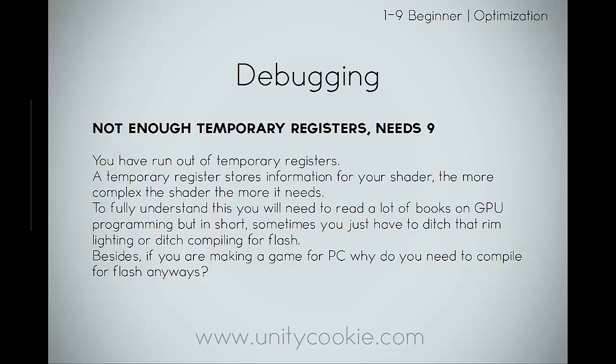The next error is 'not enough temporary registers, needs nine' - that nine is just an arbitrary number, it can be nine, ten, eleven, depending on what you're doing. This just means that you have run out of temporary registers. A temporary register stores information for your shader; the more complex the shader, the more it needs. To fully understand this you'd need to read books on GPU programming, but in short, sometimes you just have to ditch that rim lighting or ditch compiling for Flash. Besides, if you are making a game for PC, why do you need to compile for Flash anyway?